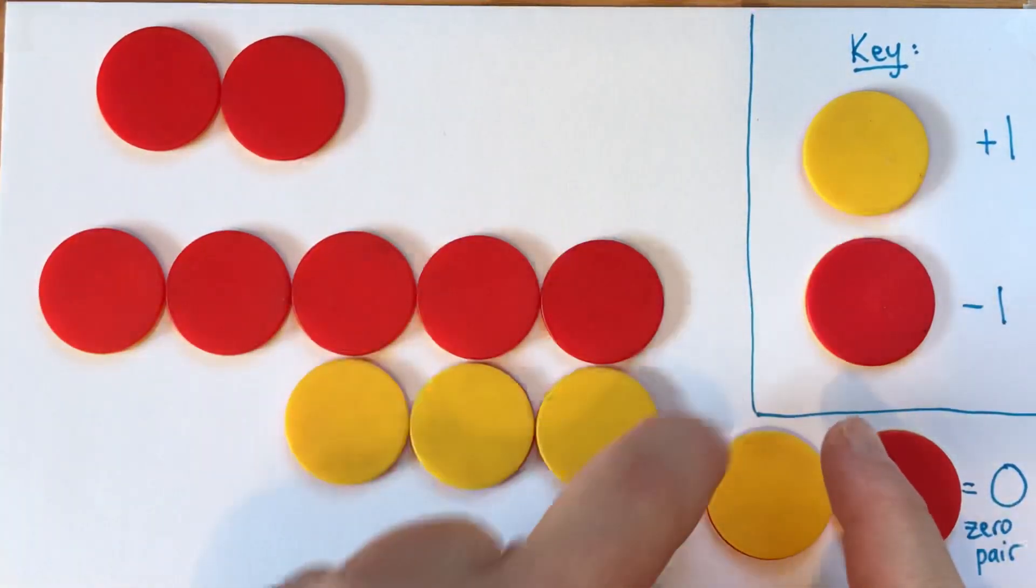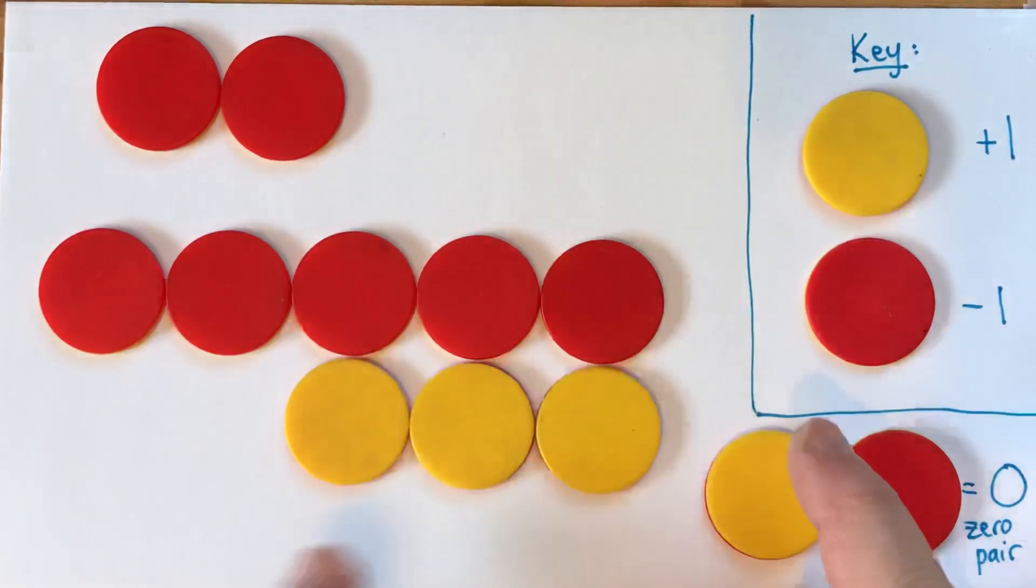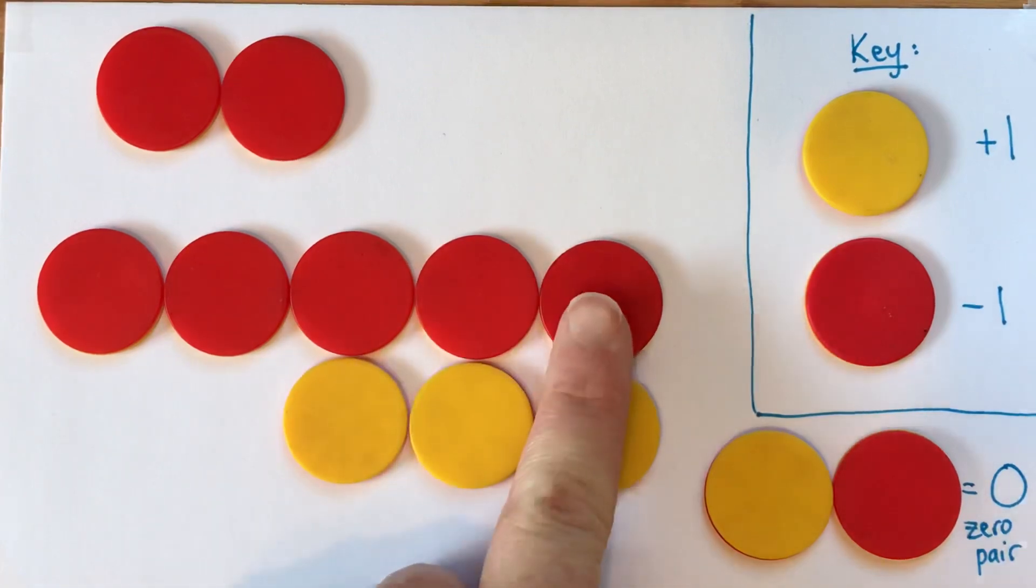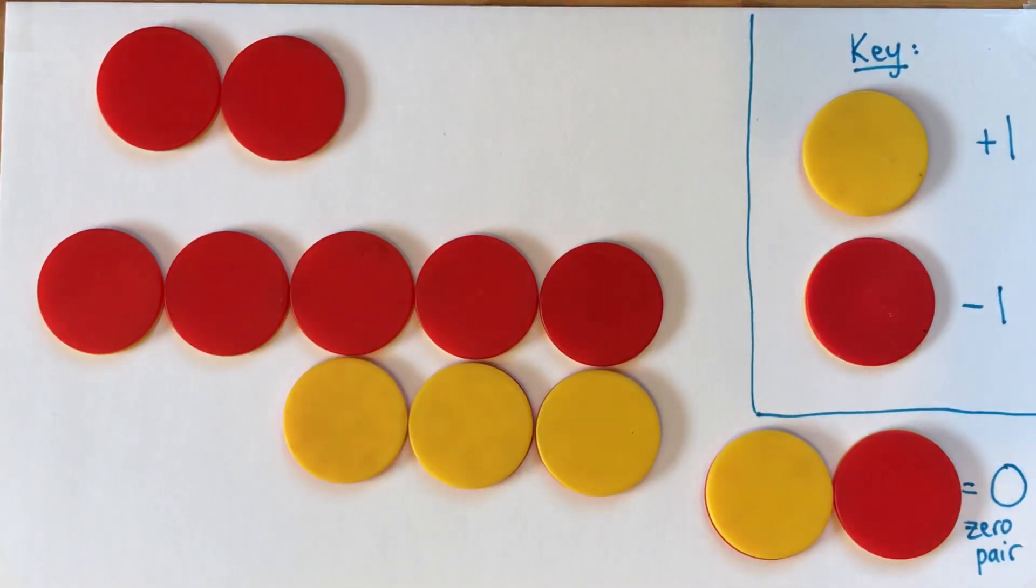So this group of counters here is worth negative two, because negative one, negative two, zero, zero, and zero. All right. I hope that was helpful. Thanks.